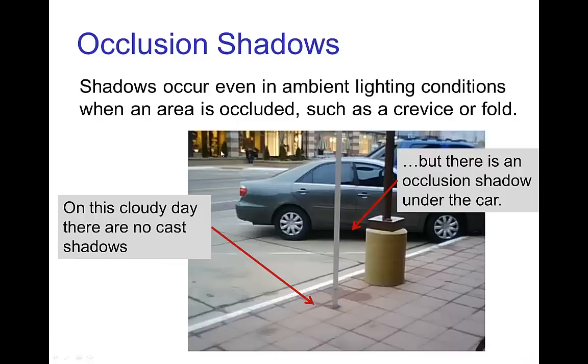Now, even when we have a bright day with lots of ambient light coming from the sky, we still have shadows that can occur due to occlusion. Occlusion is when we have, say, a shadow under a car, or a shadow where two surfaces are close to each other, basically situations where even though we have illumination coming from basically all directions, just due to the geometry, not much light gets into a crevice or a fold. You see in this photo, there's no cast shadows, it's an overcast day, so there's lots of ambient light. However, there's still an occlusion shadow under the car.